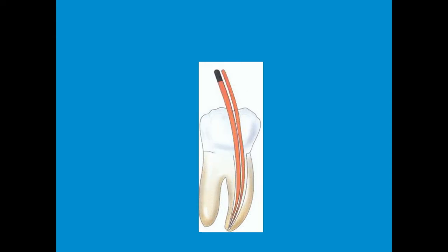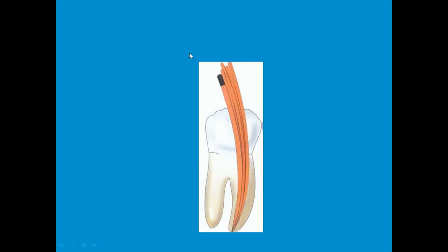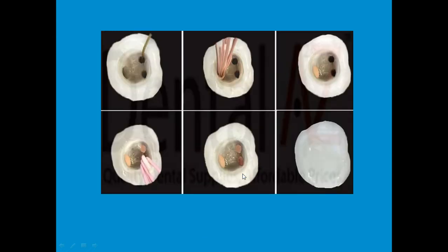The third step is called obturation. Once the canal has been shaped and cleaned, the next step is filling it up — we cannot leave it open. It is filled with an inert material called gutta-percha. In multi-rooted teeth or molars, we usually find three to four root canals. One after another, after they are cleaned and shaped, they are obturated with gutta-percha, then sheared off and restored.